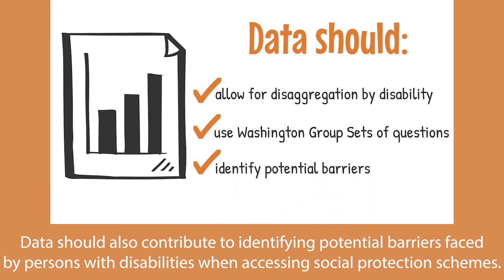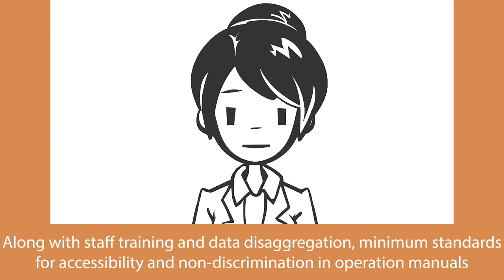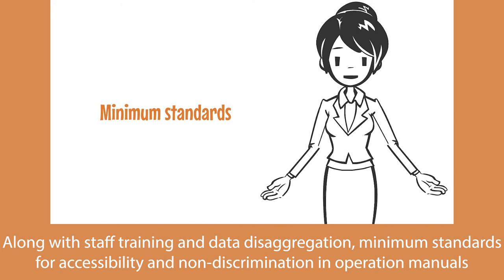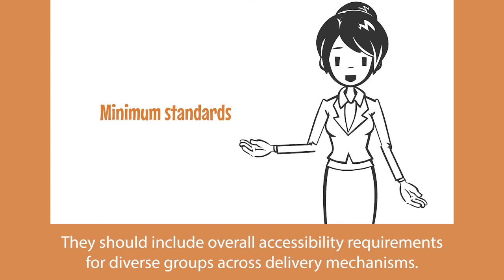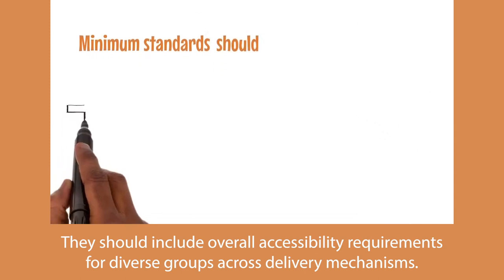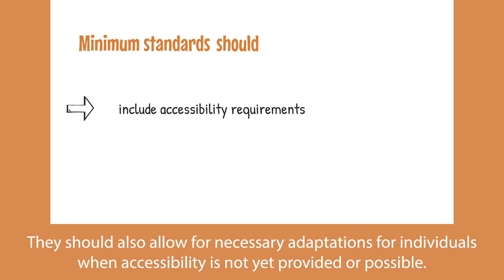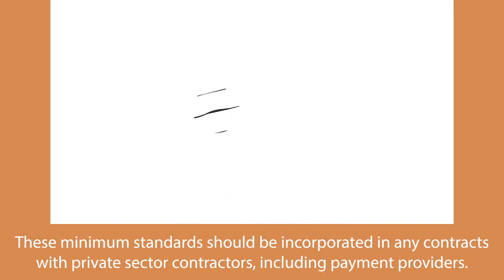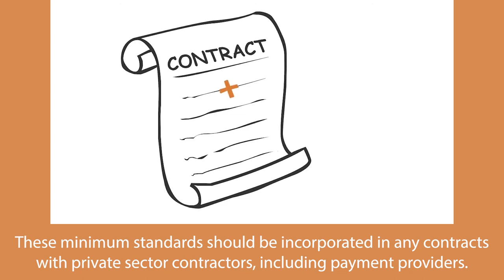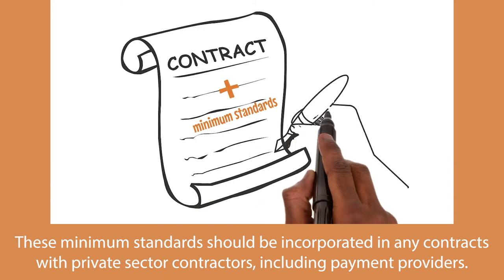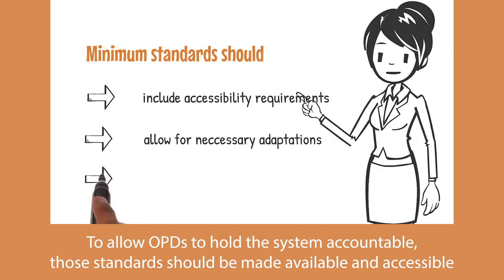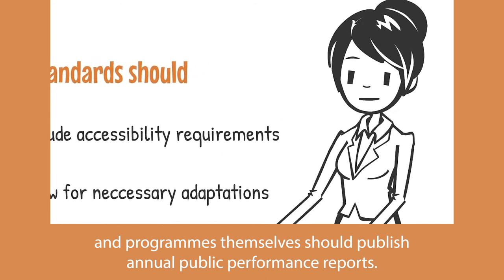Data should also contribute to identifying potential barriers faced by persons with disabilities when accessing social protection schemes. Along with staff training and data disaggregation, minimum standards for accessibility and non-discrimination in operation manuals and tenders could go a long way in improving overall access. They should include overall accessibility requirements for diverse groups across delivery mechanisms, and allow for necessary adaptations for individuals when accessibility is not yet provided or possible. These minimum standards should be incorporated in contracts with private sector contractors, including payment providers. Those standards should be made available and accessible, and programs should publish annual public performance reports.